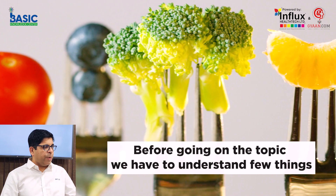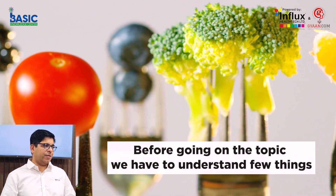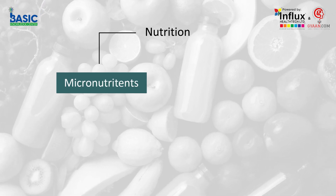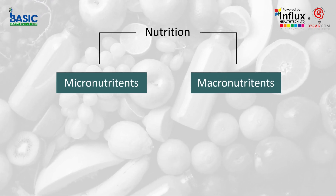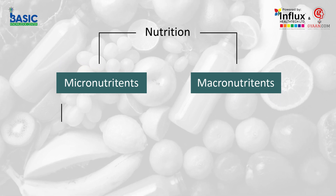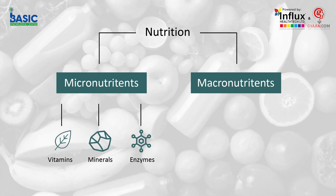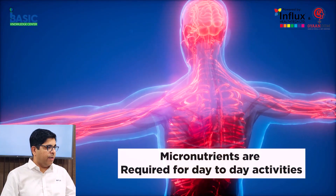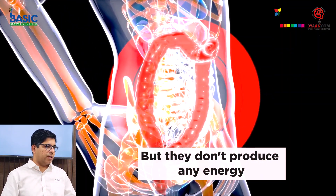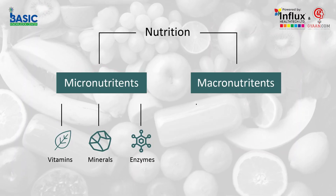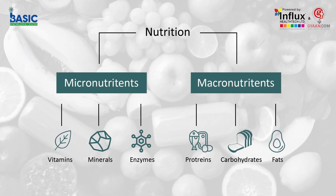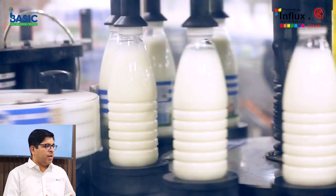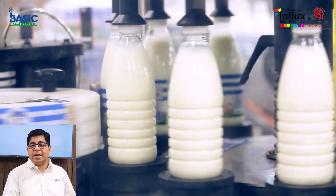Before we go on to the topic, we have to understand a few things. In nutrition there are two main things: micronutrients and macronutrients. Micronutrients are generally vitamins, minerals, and enzymes — ingredients that are required in the body for day-to-day activity, but they don't produce energy. Macronutrients like protein, carbohydrate, and fats are the actual ingredients that produce energy. Today we will understand how this energy is calculated.